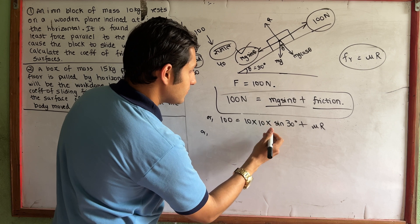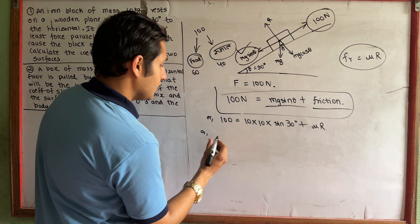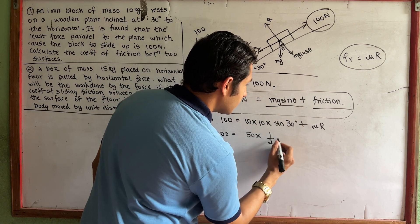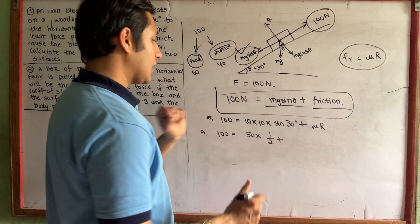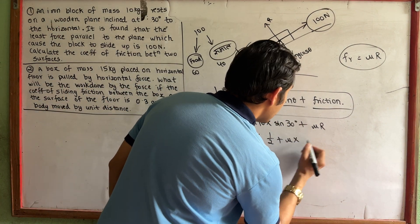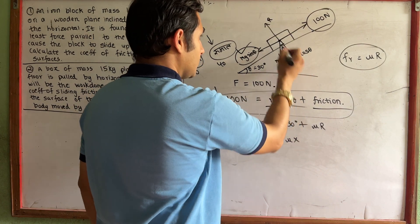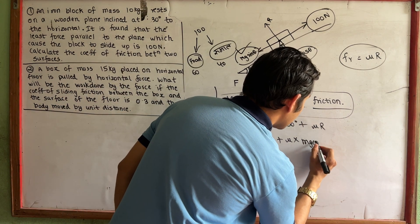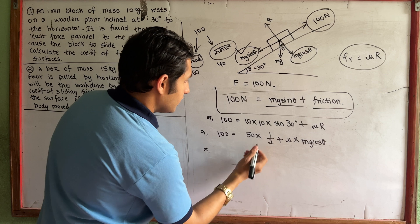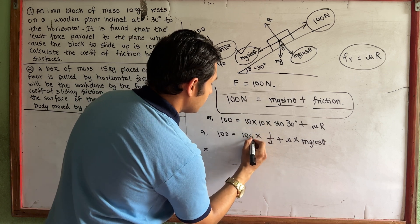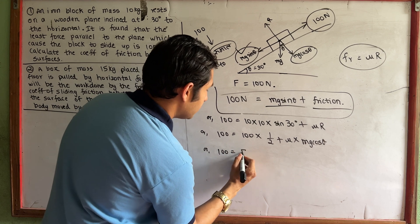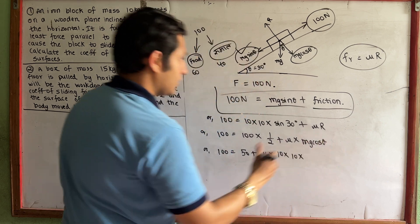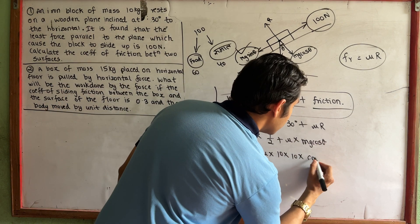So, 10 into 10 into sine 30. Sine 30 is 1 by 2, so that gives 50. And R equals Mg cos theta, which is M G cos theta. So 100 equals 50 plus mu into M value 10, G value 10, and cos 30.